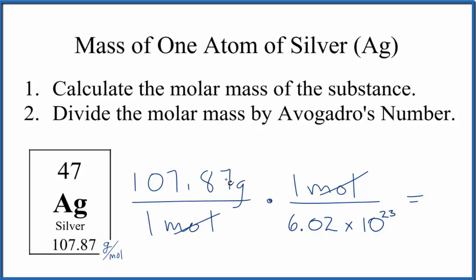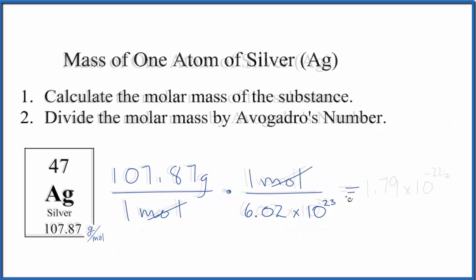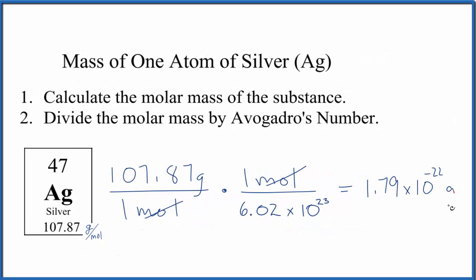When we divide 107.87 by Avogadro's number, we get in the units, they're going to be grams.